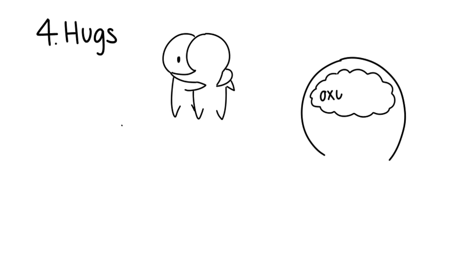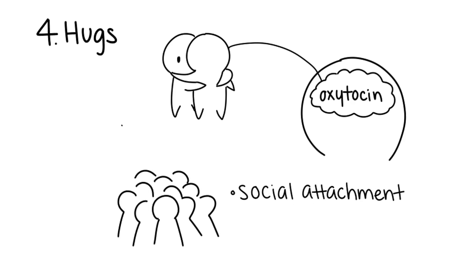When we hug, the chemical that the brain releases is the hormone oxytocin. It has been hypothesized that oxytocin, a hormone recognized for its role in social attachment and facilitation of social interactions, is also important in the formation of trust.